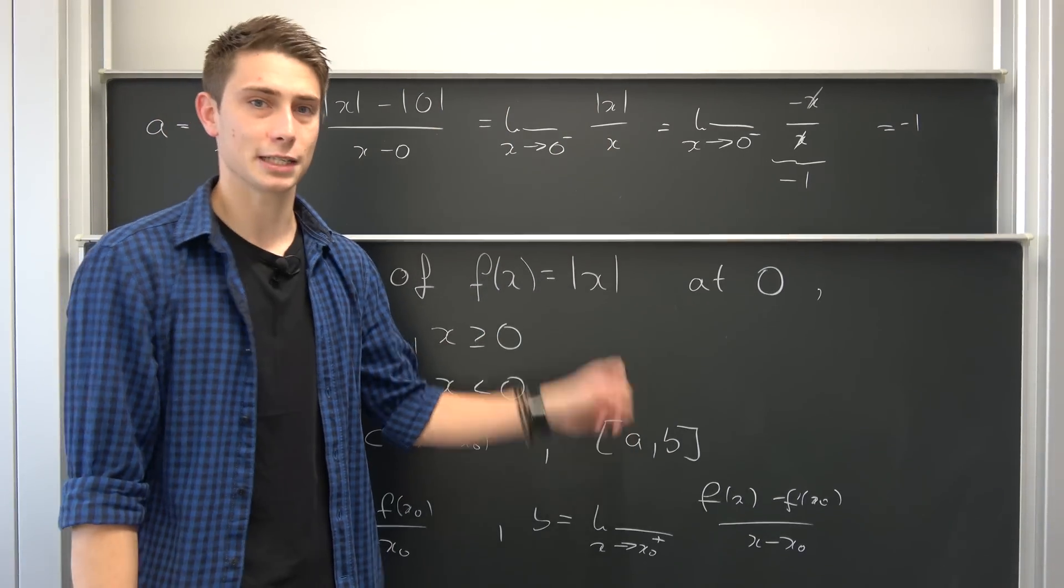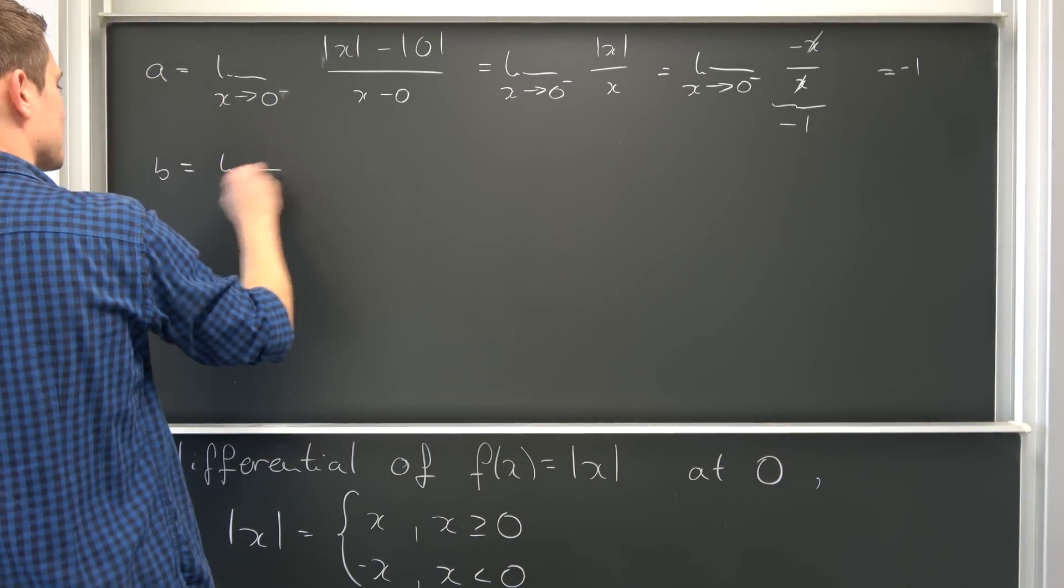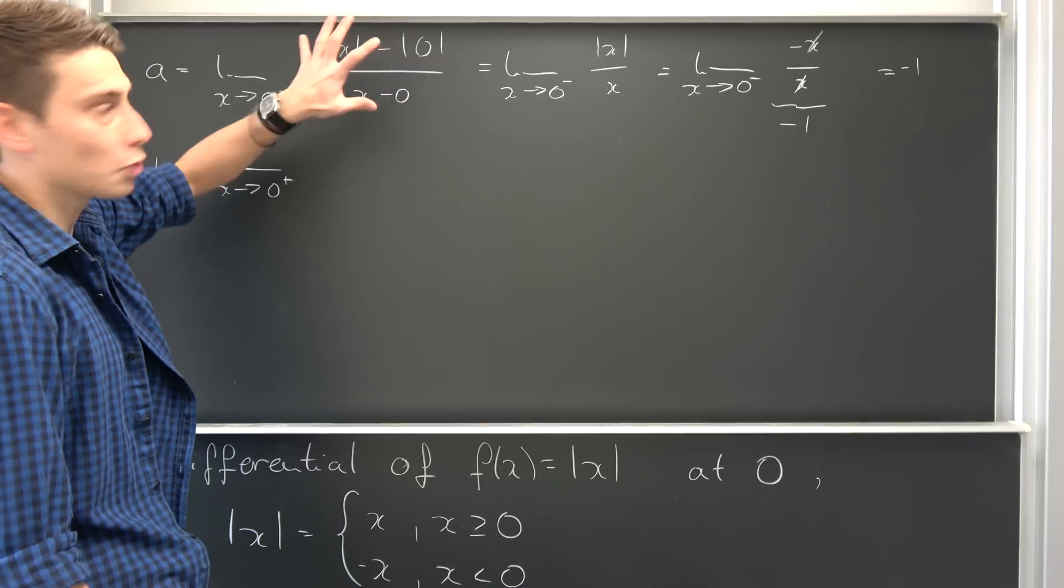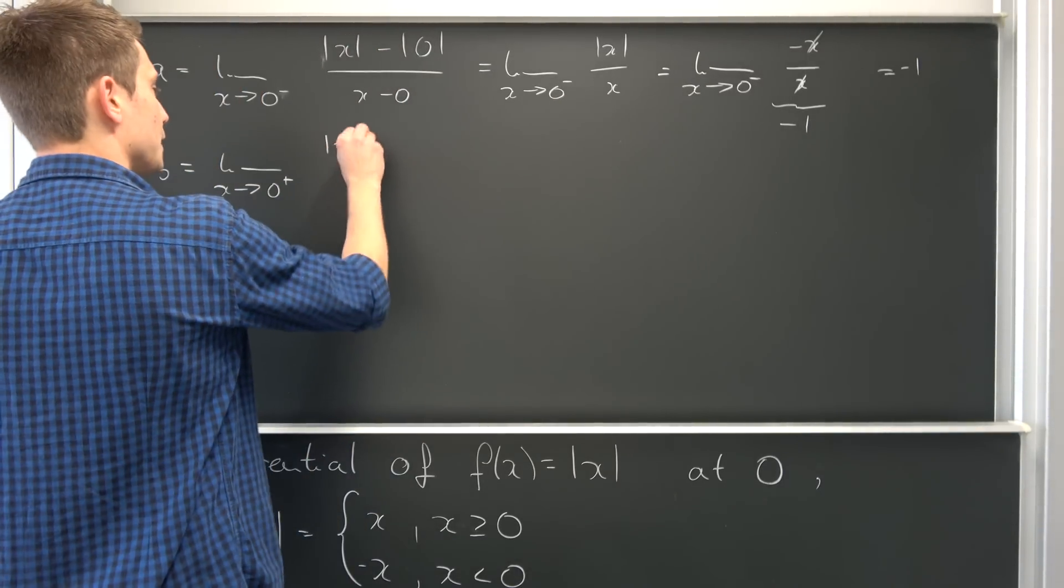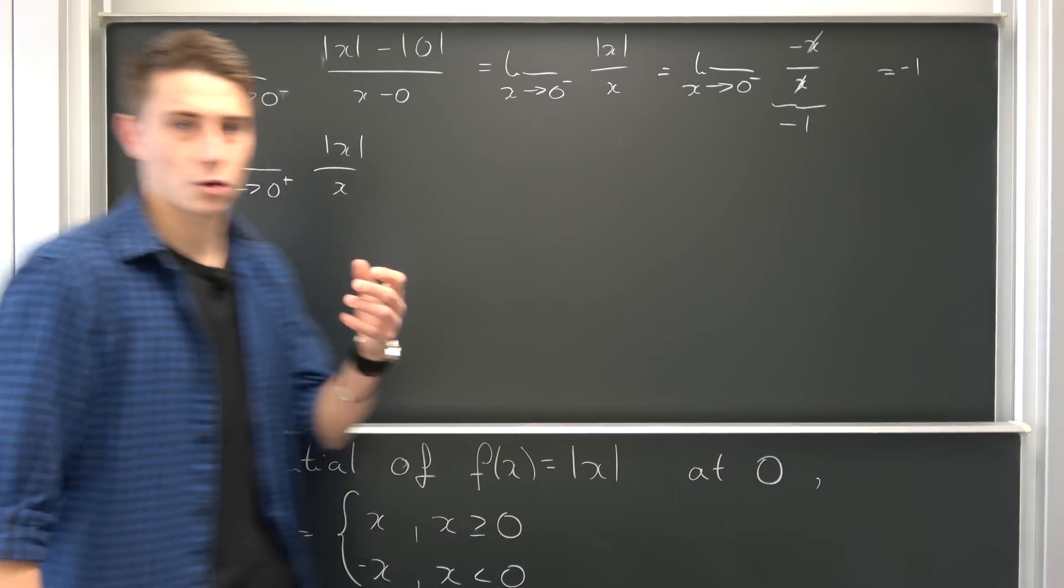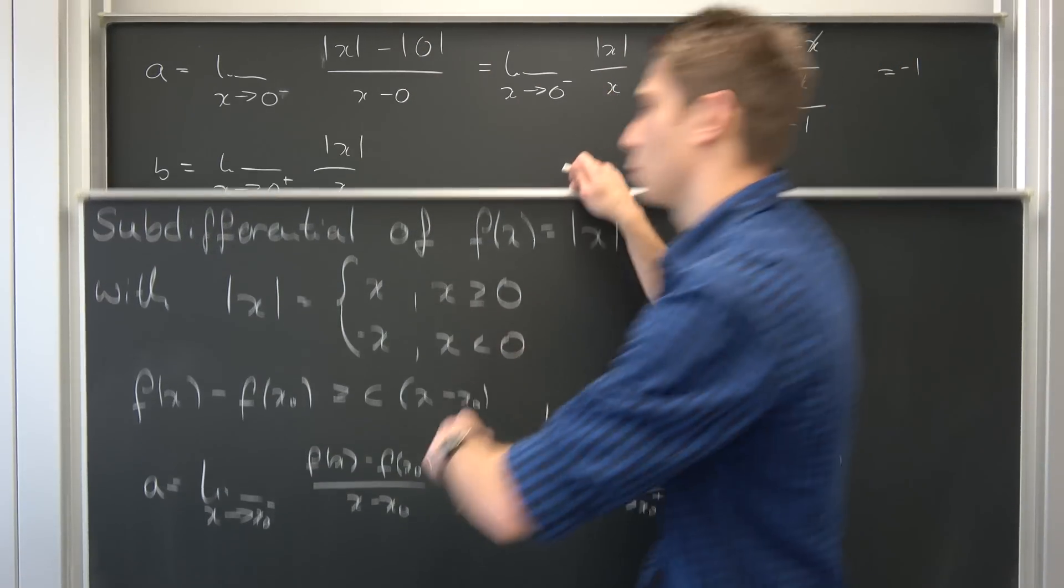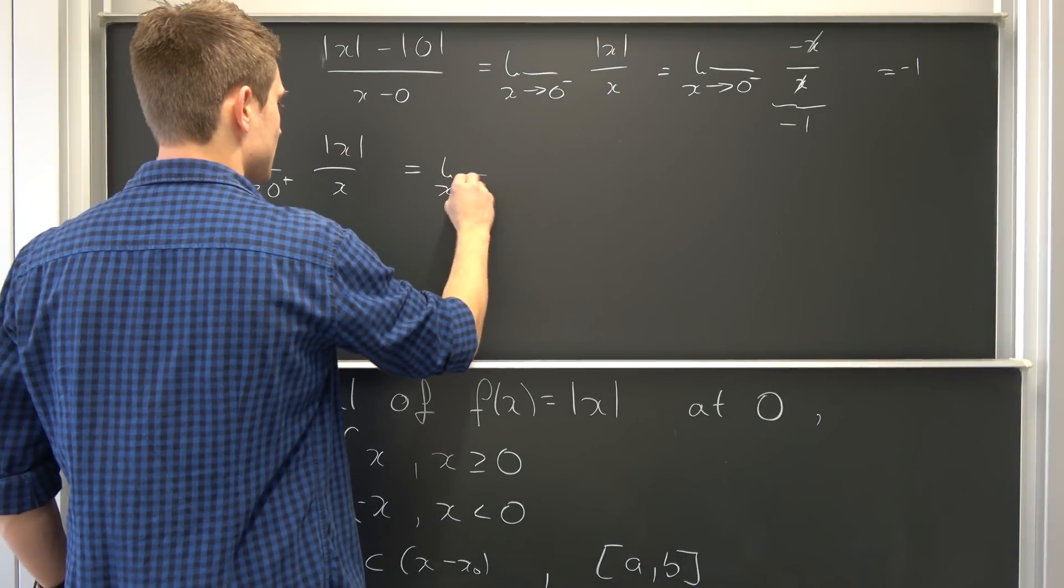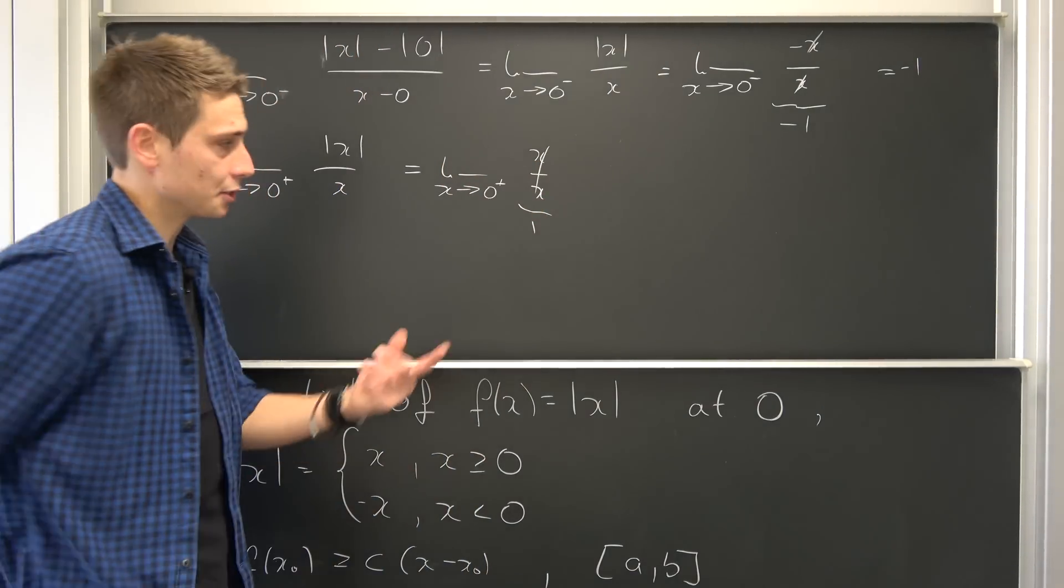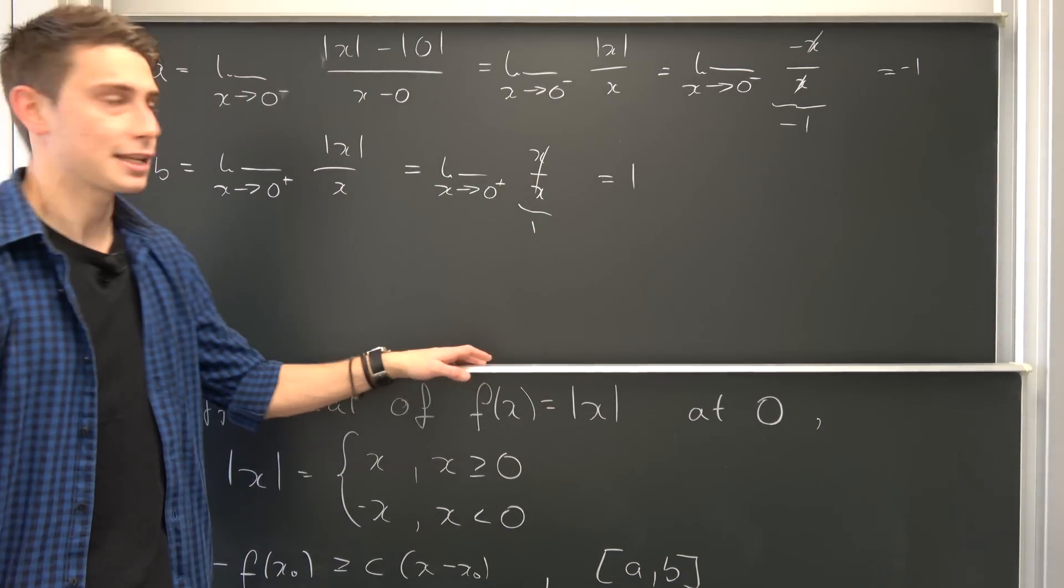Let's continue with the upper bound b, which is the limit as x approaches zero plus. We have |x| / x, but now x is only going to take positive values. So we have positive x, which gives us the limit as x approaches zero plus of x/x, which is just 1. This is another constant, and the limit of a constant is just the constant itself. So b equals 1.